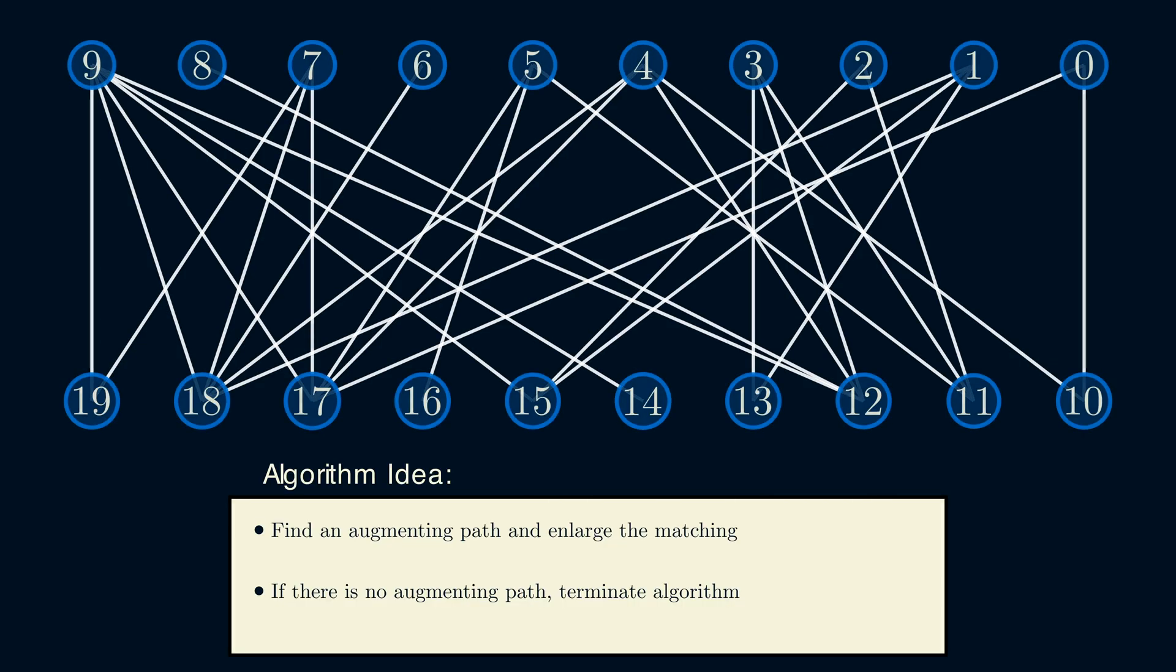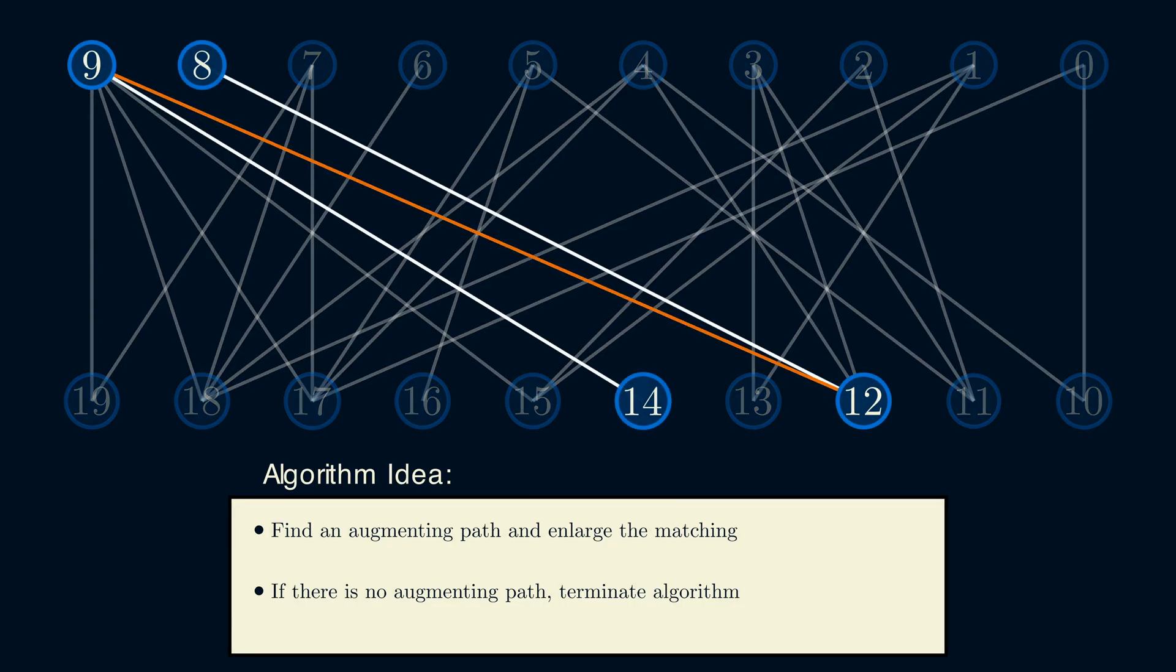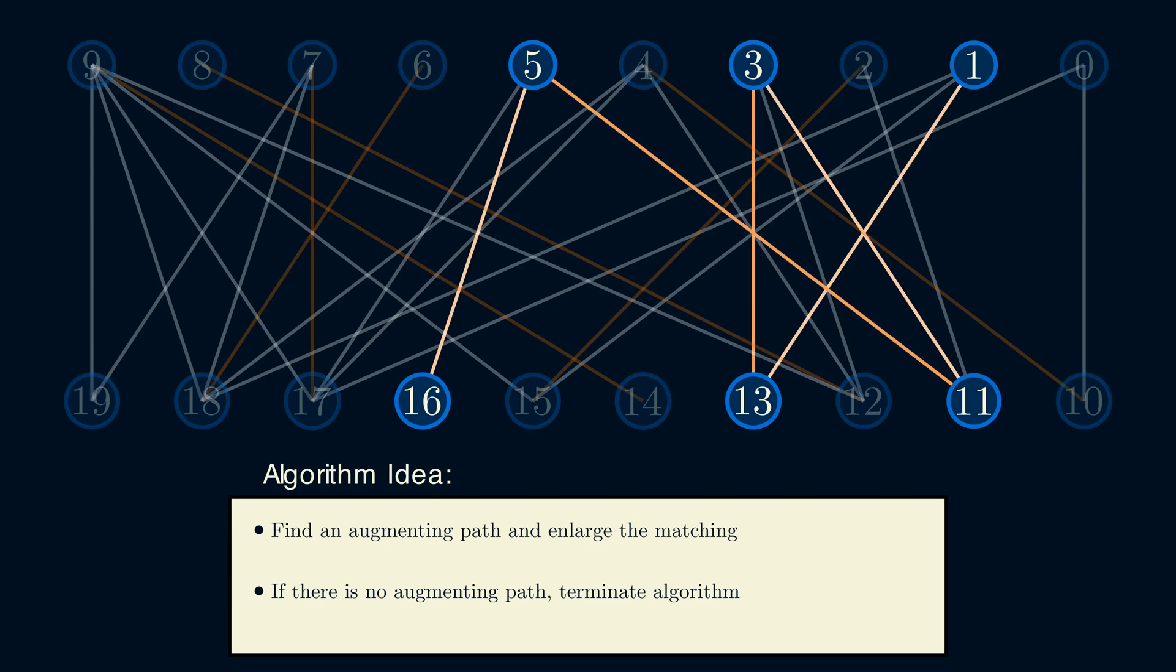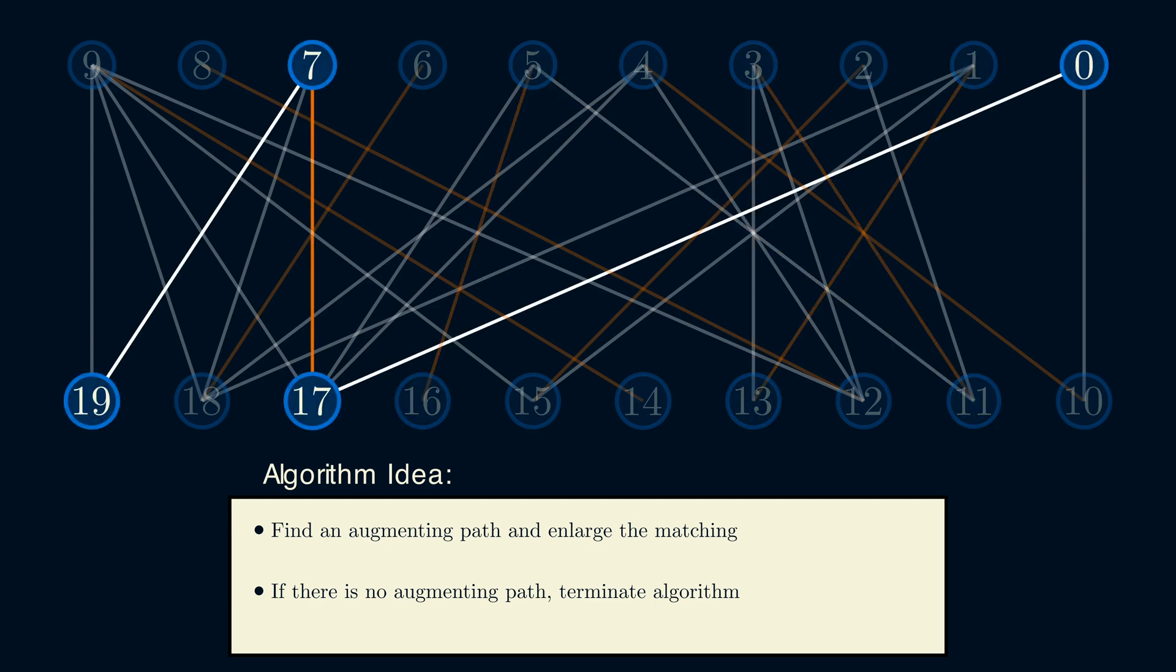Let's test this on a larger graph. The main question is, does this algorithm always terminate in a maximum matching? Or in other words, if we can't find an augmenting path, do we have the largest matching, or is it possible that there's a larger matching that can't be found by just finding augmenting paths?